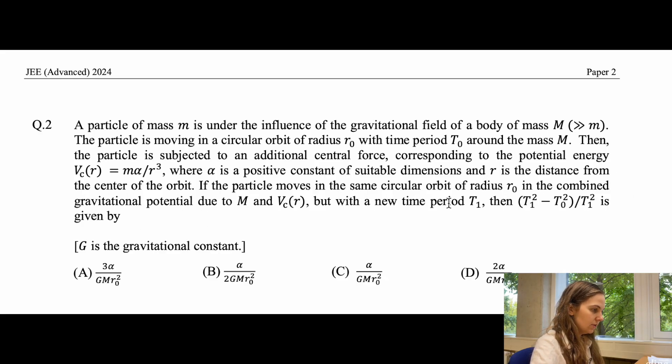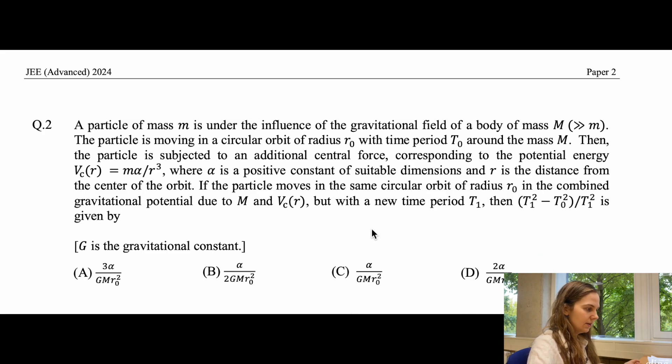If the particle moves in the same circular orbit of radius r0 in the combined gravitational potential due to the larger mass and Vc, but with a new time period t1, then t1 squared minus t0 squared over t1 squared is given by, and as usual we're given four different options, and our task is to determine which of these options are correct. So when solving physics problems it can always be good to draw a figure to understand it a bit better.